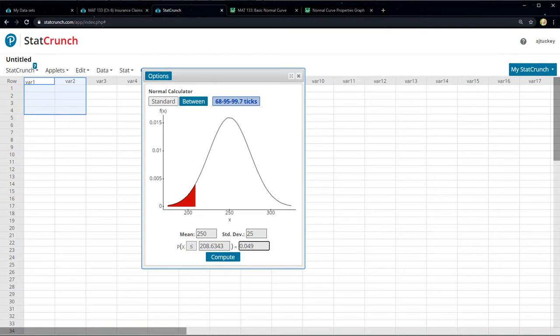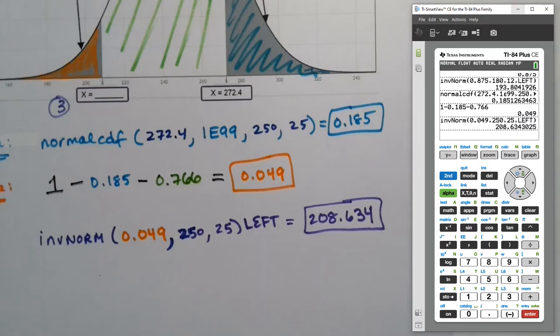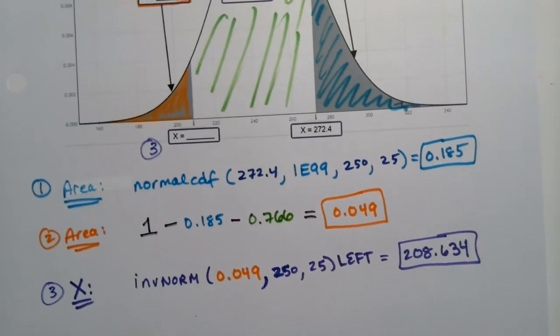and you'll say the less than was 0.049, enter. And there you have it, 208.6. It should look like that portion of the graph looks. And so it does, so we know that our answer is correct.